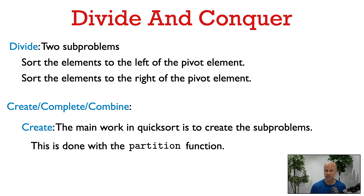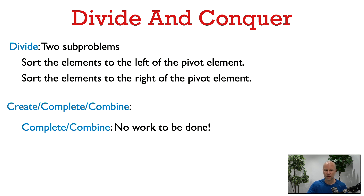The partition function puts the pivot element in the right place, ensures everything to its left is less than or equal to it and everything to its right is greater than or equal to it, and thereby defines the sub-problems so we can recursively call QuickSort on the left and right parts. For the complete and combined steps, there's really no work to be done — QuickSort is all about creating the sub-problems and recursively solving them.